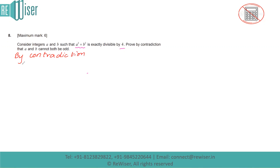I am going to assume that a and b are odd integers. Using that assumption, I will try to prove that a squared plus b squared is exactly divisible by 4. If I am not able to prove it, then I can conclude that a and b cannot both be odd — that is what is meant by proof by contradiction.